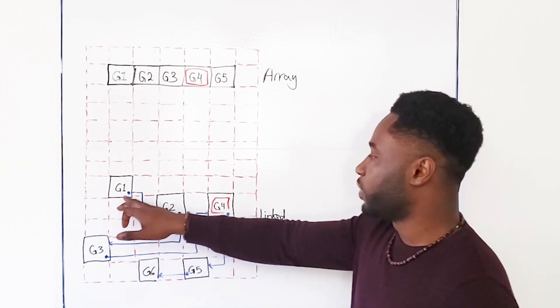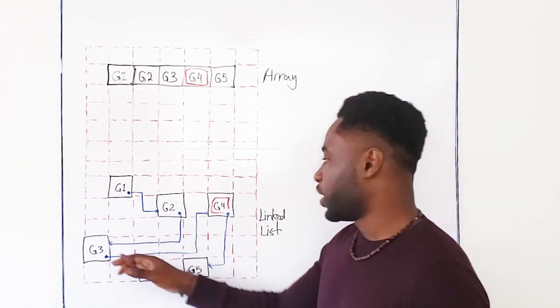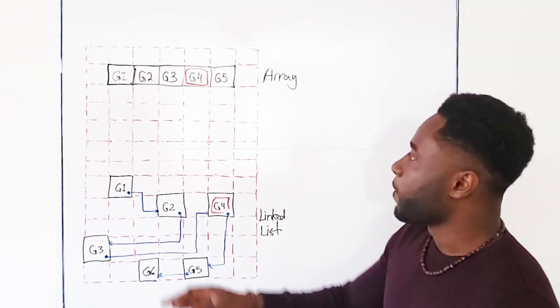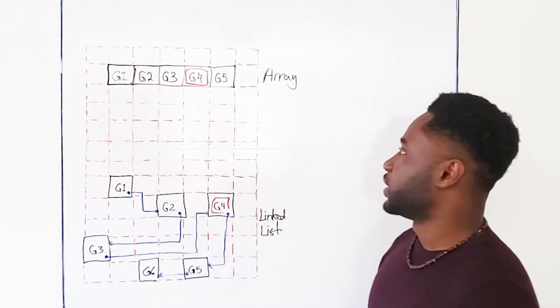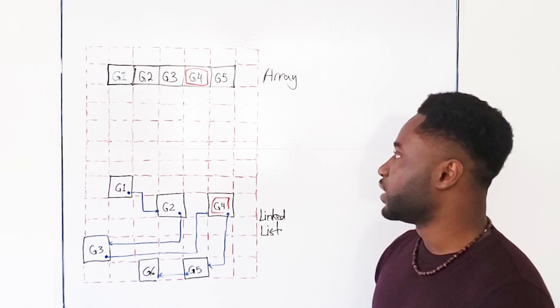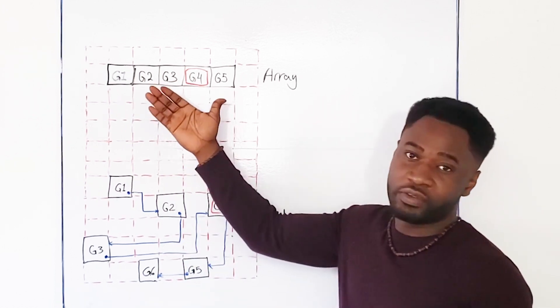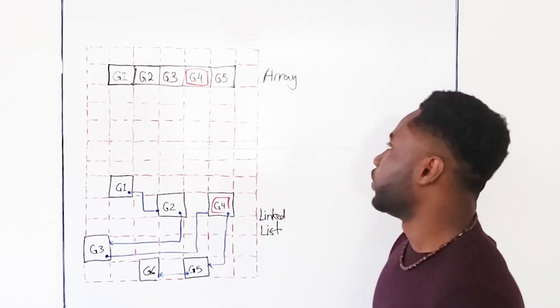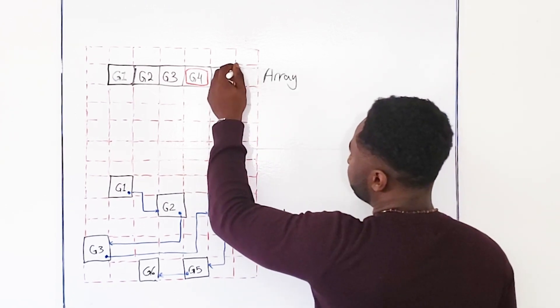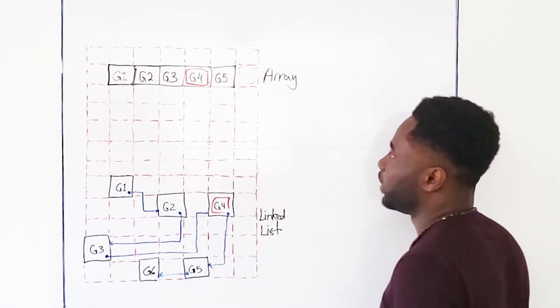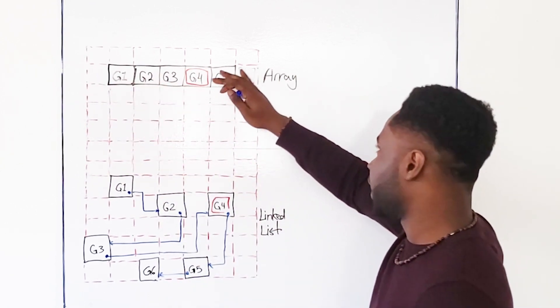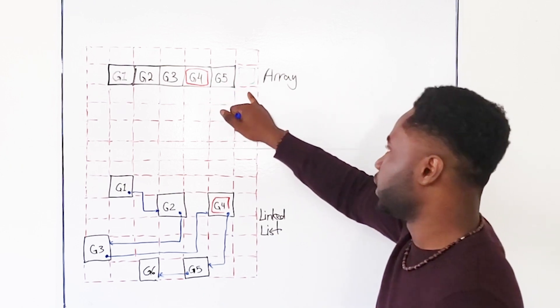And as long as we have a reference to each block, we can keep track of where each block is. And the reason why we can't expand an array is because our program is not the only program that will be used in our computer memory. Another program could also reserve this spot right here, for instance. And so if we wanted to expand this, we can't do that because we didn't reserve this space.